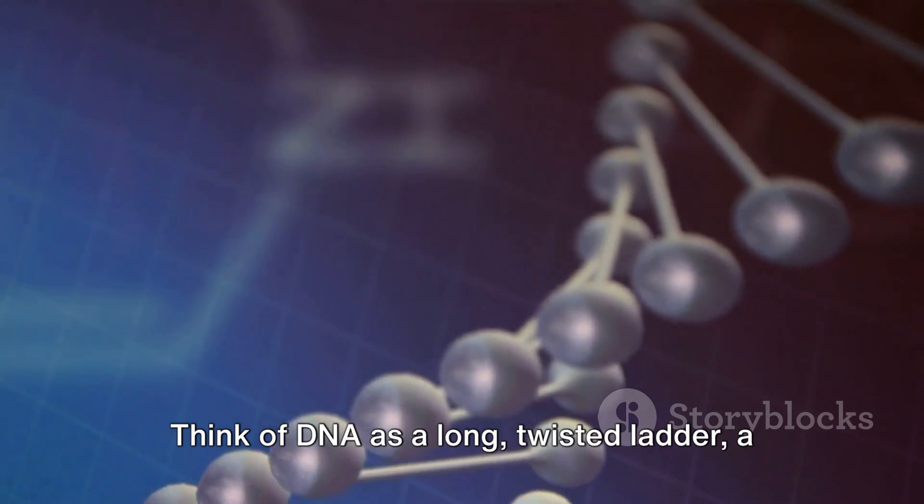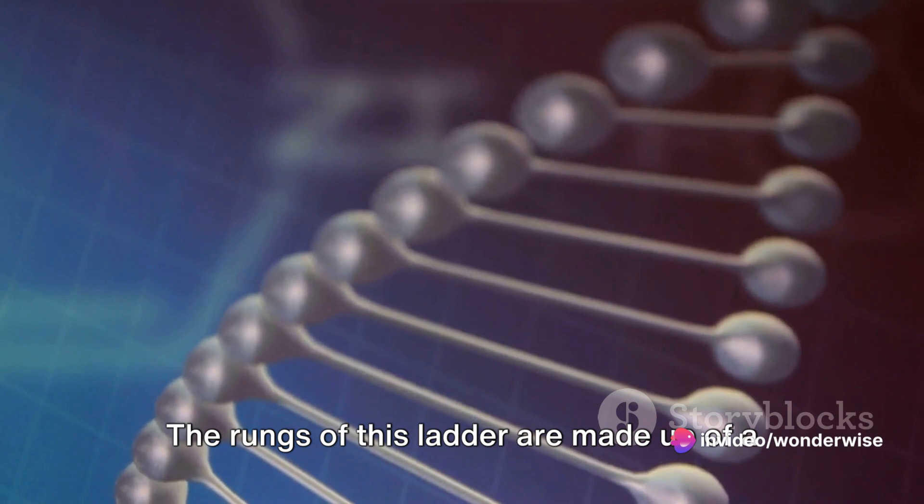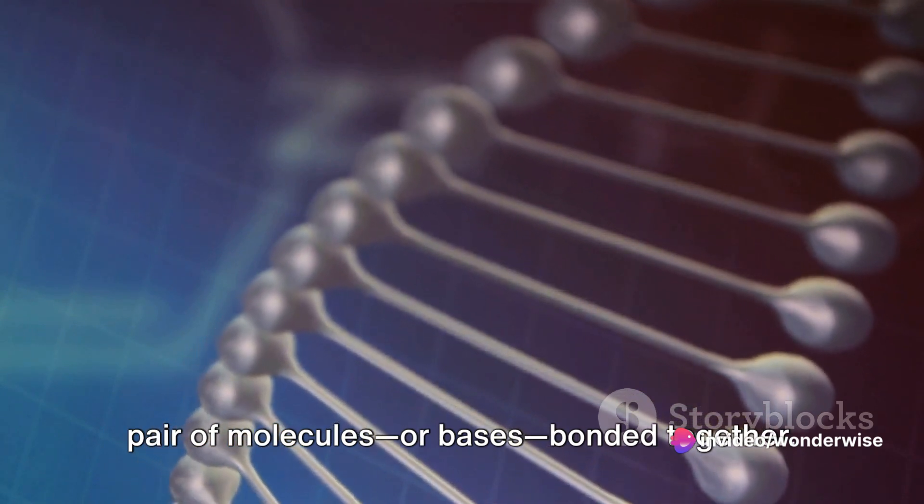Think of DNA as a long, twisted ladder, a structure known as the double helix. The rungs of this ladder are made up of a pair of molecules or bases bonded together.